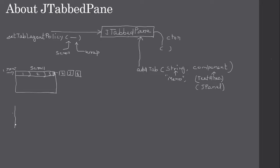For the same case if you set the layout as wrap, the controls are stacked in two rows and you can see all six tabs. This is called wrap style. Whether you want scroll style or wrap style, you can set it using setTabLayoutPolicy by passing the required constant — either present your tabs in a single scrollable row or in multiple lines using the wrap style.